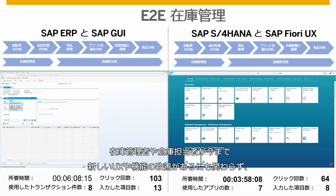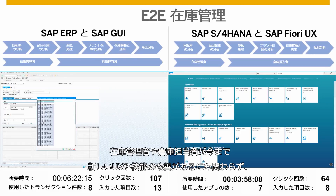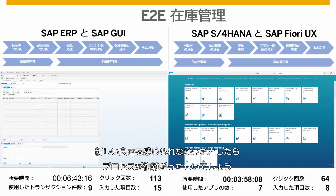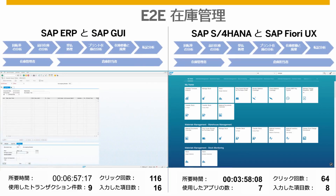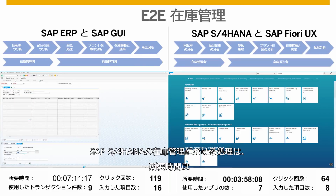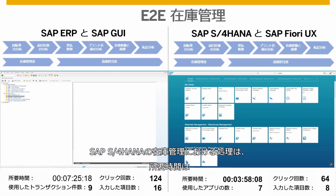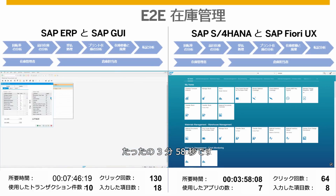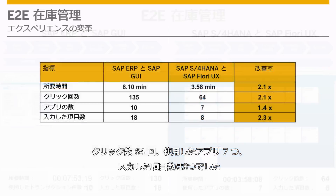If the inventory manager and warehouse clerk didn't have the benefit of the new UX and improved functionality, the process would have been more complex. With SAP S4HANA, the inventory management process takes just 3 minutes and 58 seconds, with 64 clicks, 7 apps, and 8 fields filled.